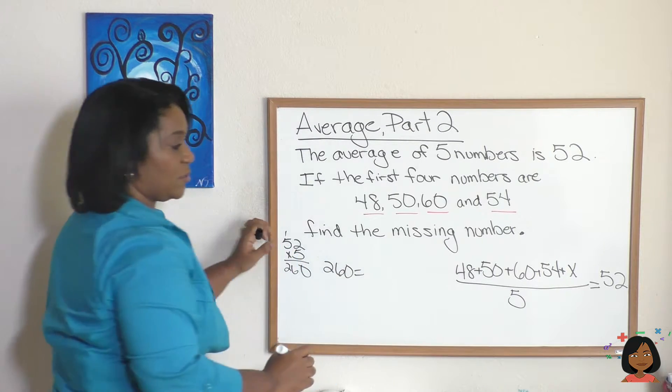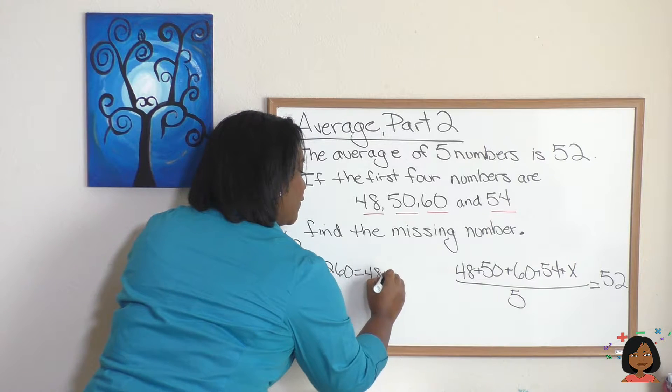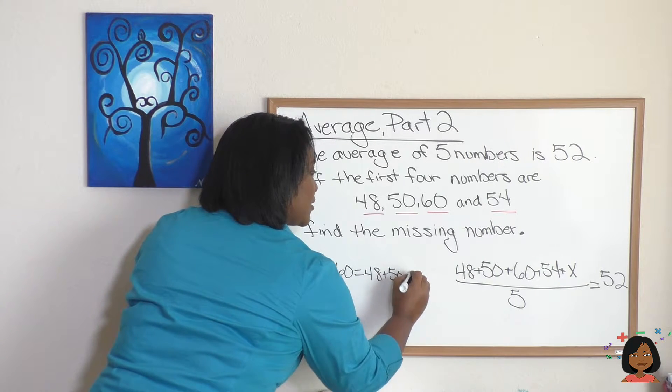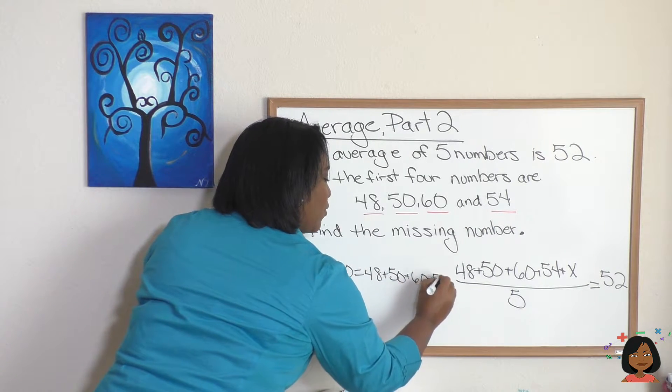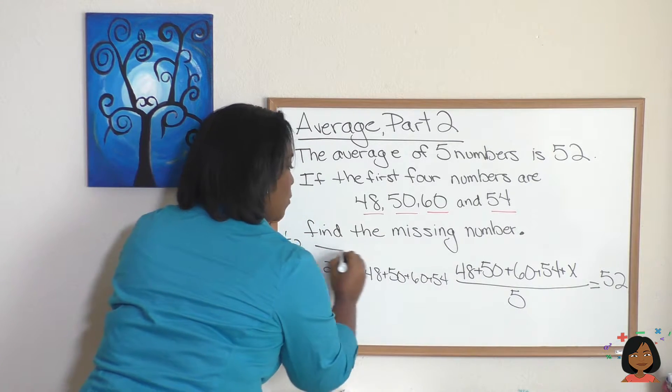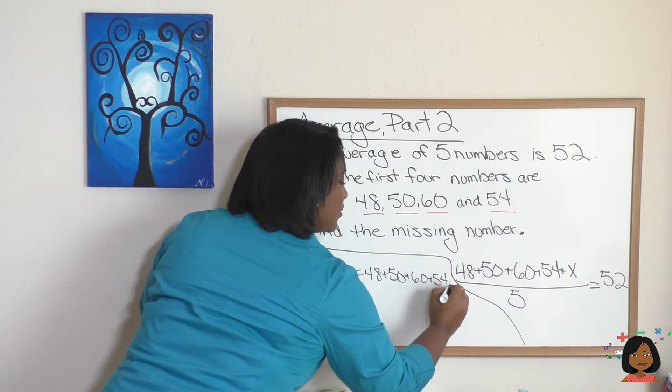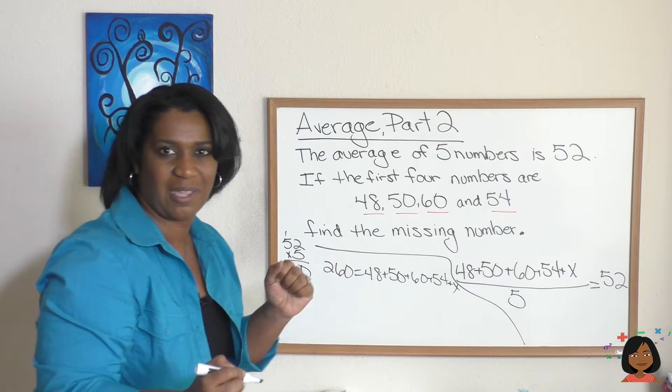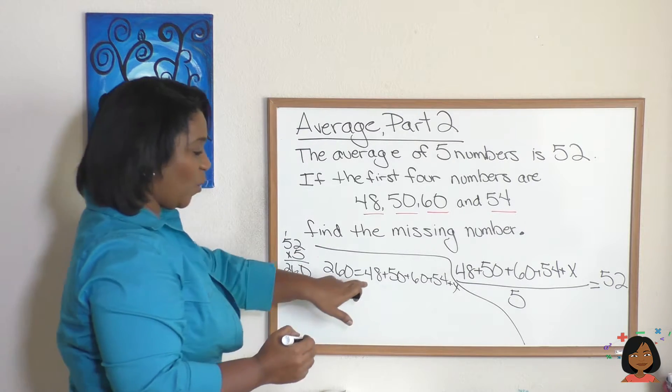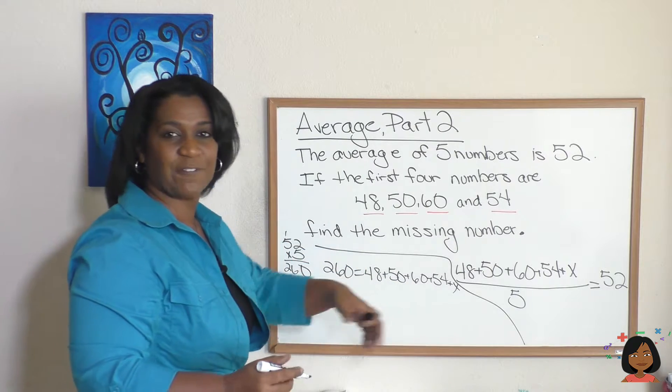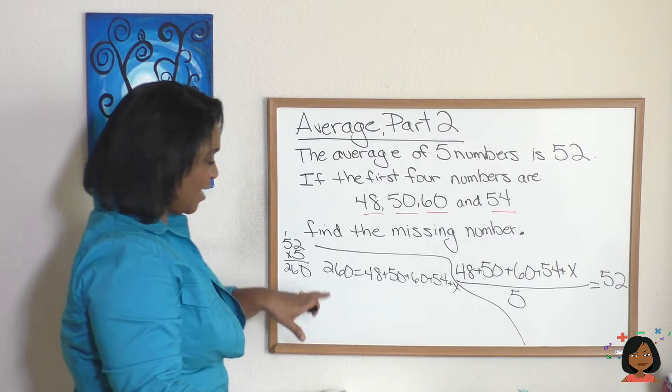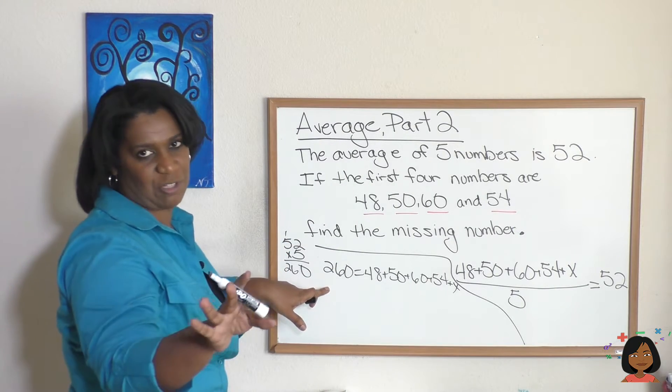So we have 260 equals 48, 50, 60, 54, oh running out of room, plus x. Okay, are you with me? I know it's messy. And now we're going to add up all of these and then whatever is left over is that missing number.